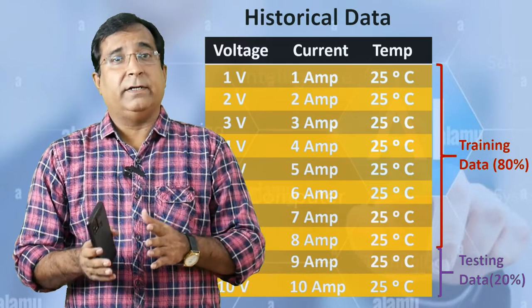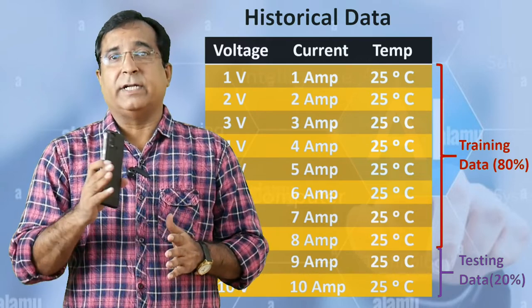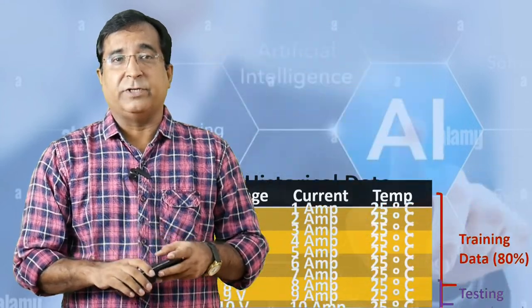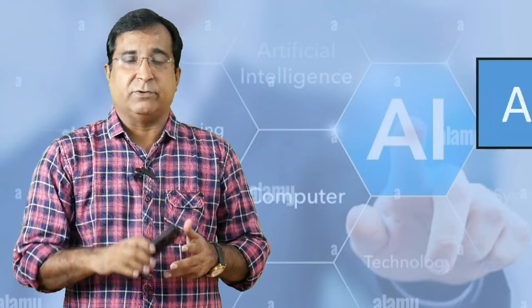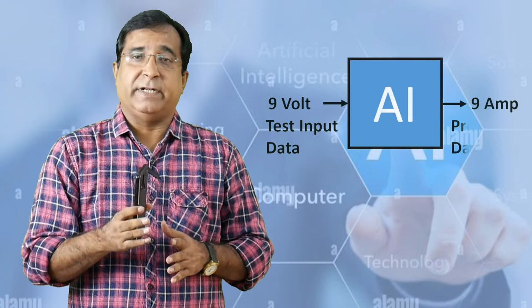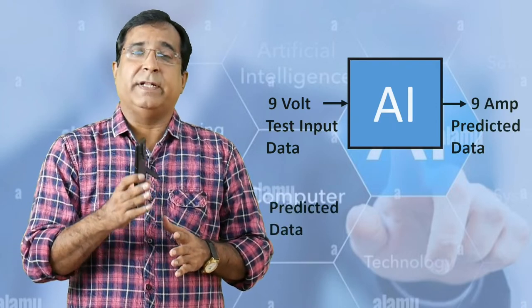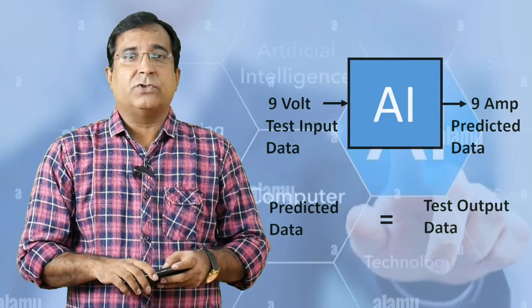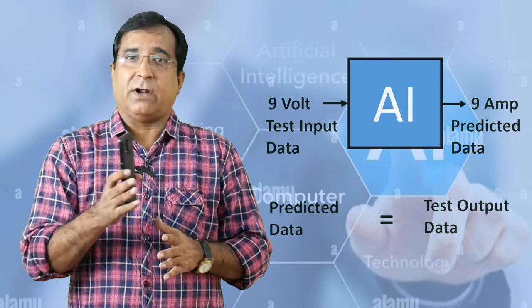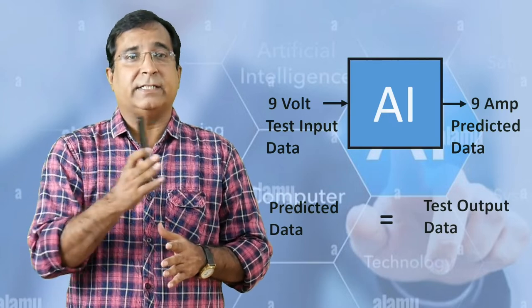So here I will feed data till 8 voltage and rest 9 volt and 10 voltage reading is with me for testing purpose. After training the AI model with 80% of historical data, I will test the AI model with my test data available with me at 9 voltage and 10 voltage inputs and will check if AI model is predicting the output data same as I have with me to be 9 ampere and 10 ampere current because if the AI model has drawn relation from 80% of data then certainly test data will follow the same relation - got it.